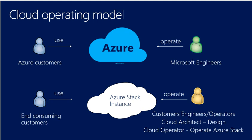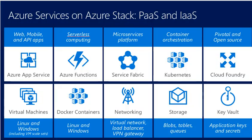The services in Azure Stack will look something like this. If I have web, mobile, and API applications — App Services, PaaS, Serverless, Azure Functions, Service Fabric, Kubernetes, Cloud Boundaries, Key Vault, Storage, Networking, Docker Containers, and Virtual Machines — all of these participate in the hybrid model. We will consume the PaaS and infrastructure for these activities.